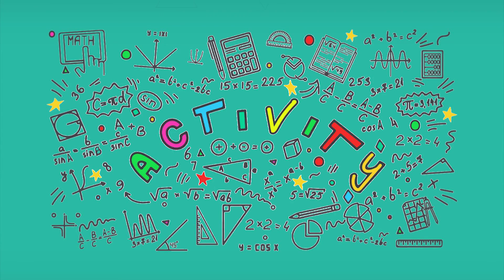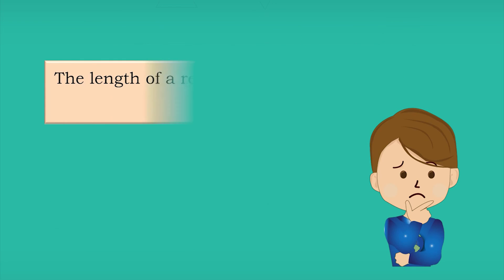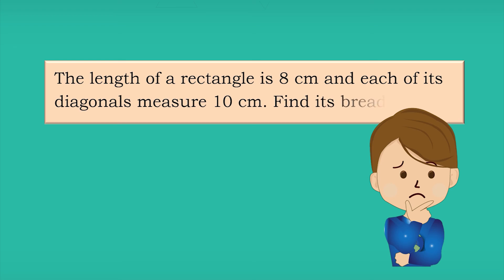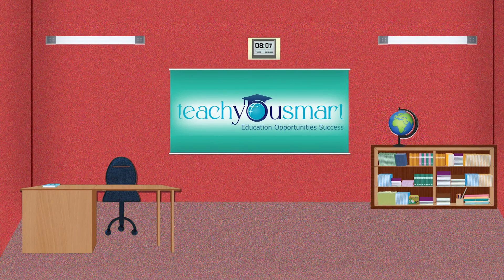Before winding up, let's check how much you understood by doing an activity. The length of a rectangle is 8 centimeters and each of its diagonals measures 10 centimeters — find its breadth. That's all for now, see you all in the next class.